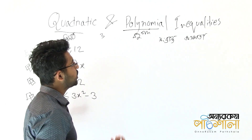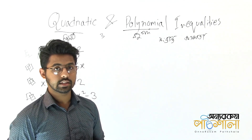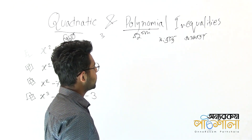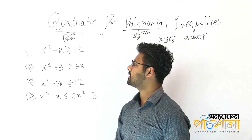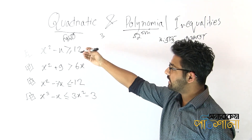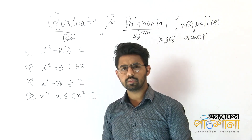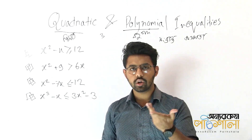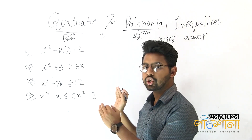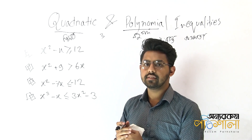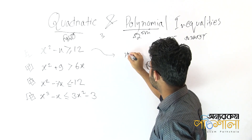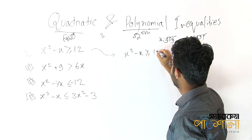We will see that the equations are very difficult, and as we think about it, we see that the quadratic is very difficult. So we can write some problems. x² - x is greater than or equal to 12. I will solve this problem using the middle term factor method.